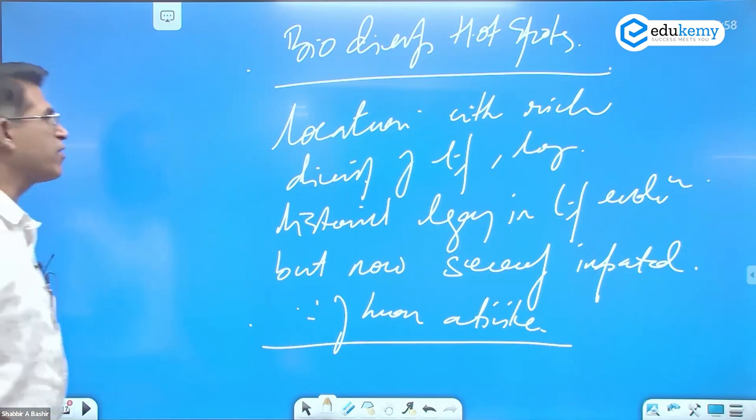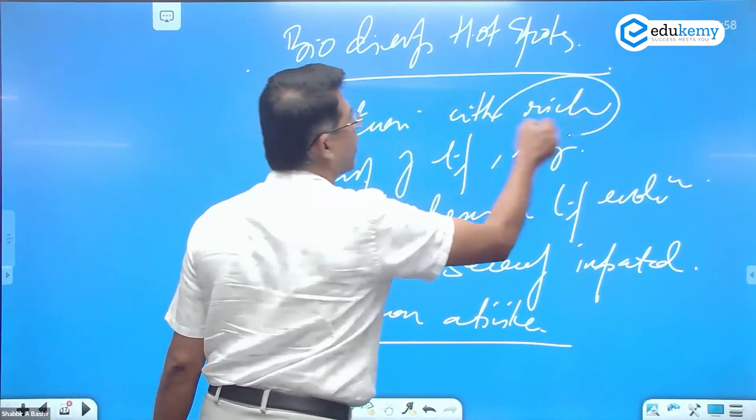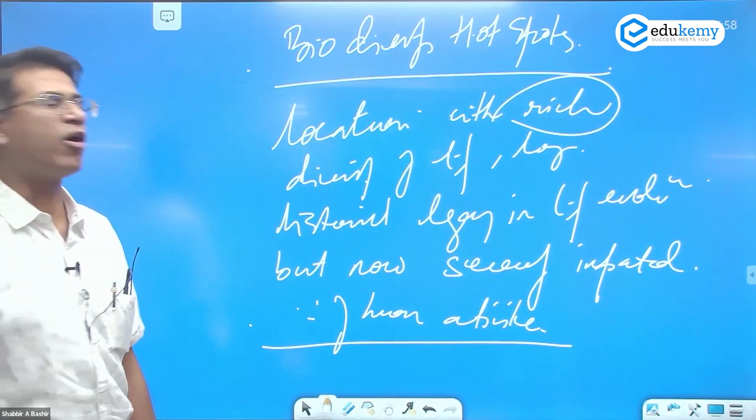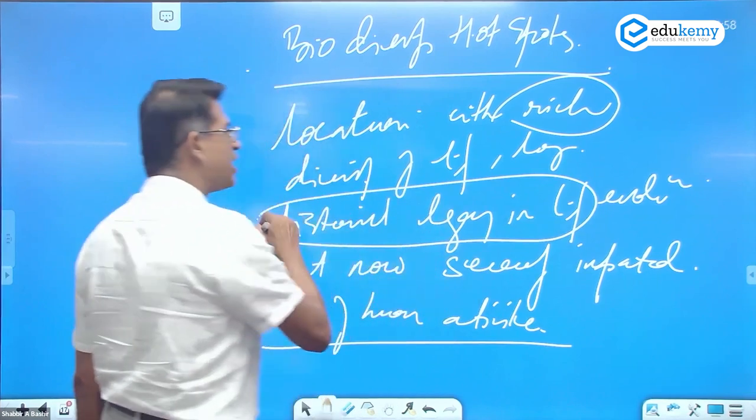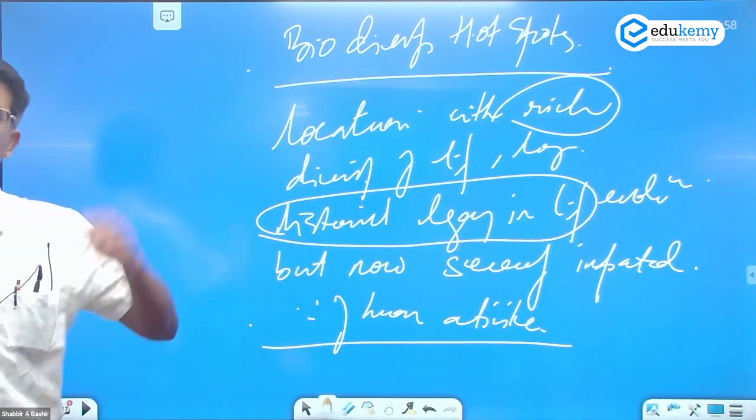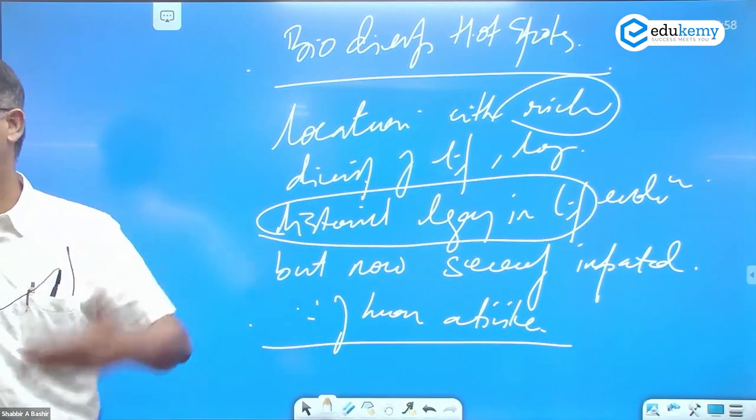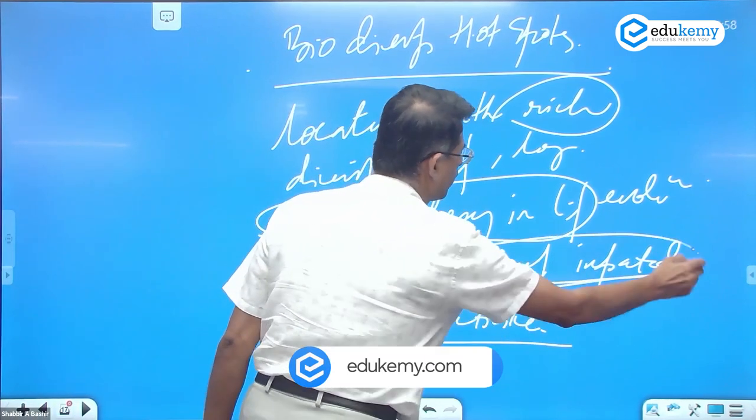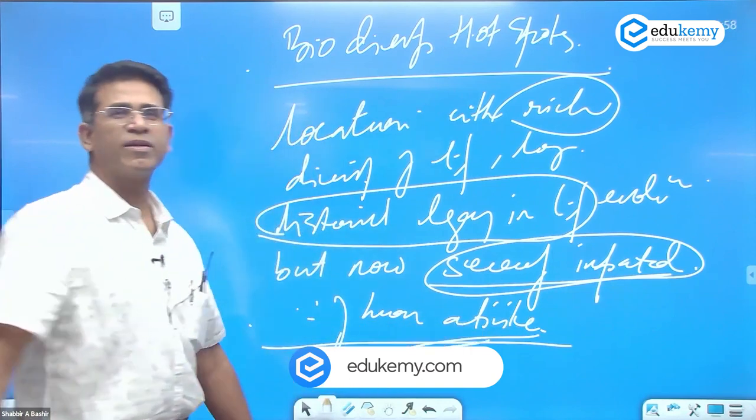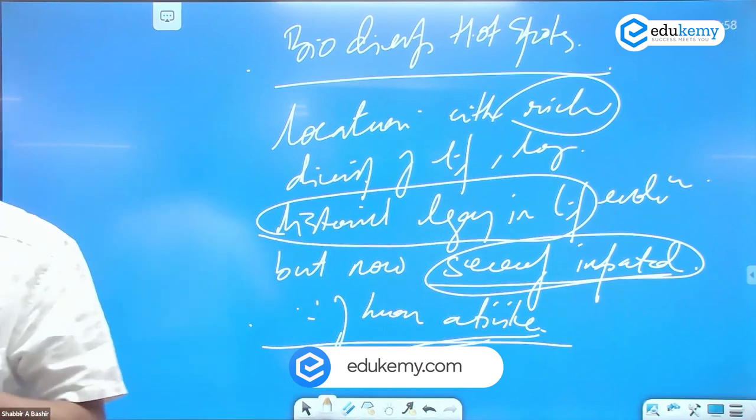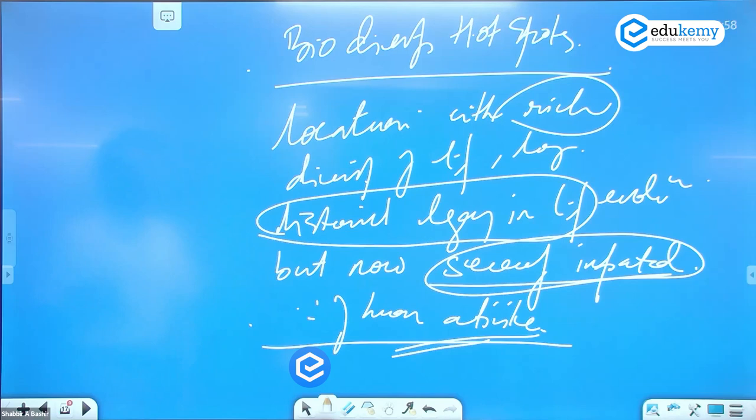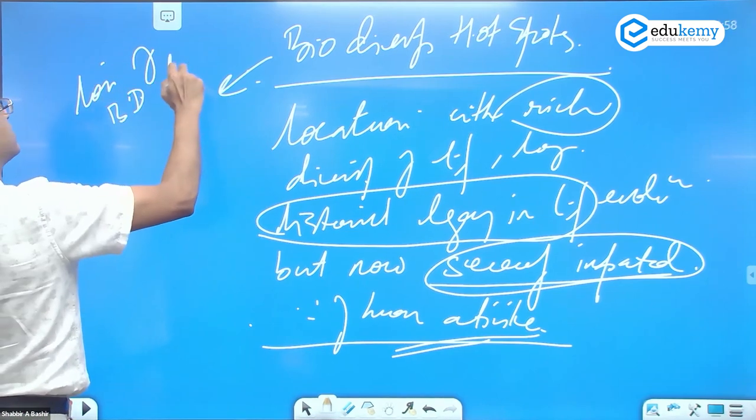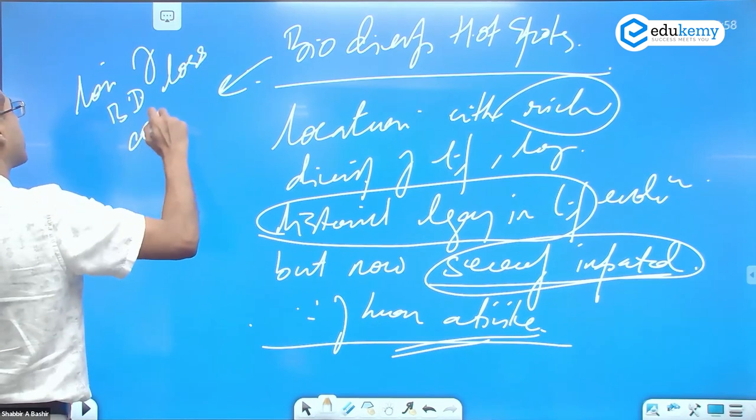It's a location which has rich biodiversity, both varieties. It has a very long historical legacy in evolution, but what has happened is they're impacted because of human activities. So hotspots essentially are locations of biodiversity loss concern.